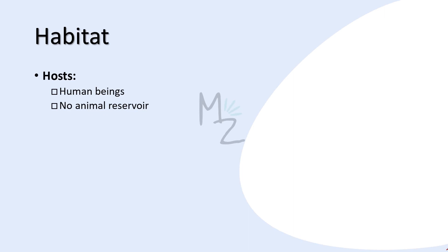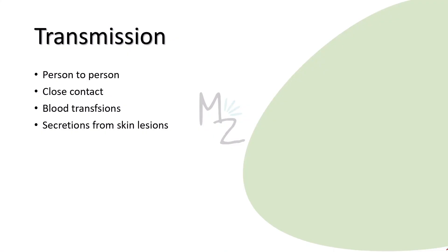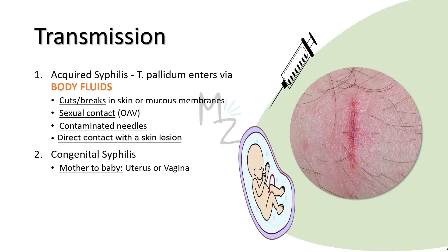Hosts are humans and there is no animal reservoir. Treponema pallidum is transmitted from spirochete-containing lesions of skin or mucous membranes by intimate contact between an infected person and another person. It can also be transferred from pregnant women to the fetus. Blood transfusions collected during early syphilis are also infectious. There are two types of syphilis: acquired and congenital. Acquired syphilis transmission occurs via body fluids, cuts and breaks in skin or mucous membranes, sexual contact whether oral, anal, or vaginal, contaminated needles, and direct contact with skin lesions filled with spirochetes.